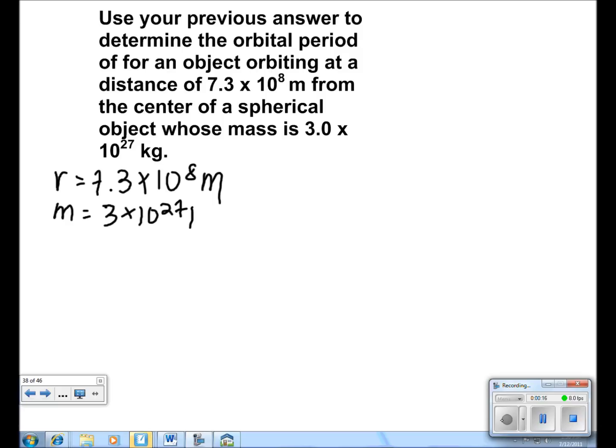We know that the gravitational constant is 6.67 times 10 to the negative 11 newton meters squared per kilogram squared.